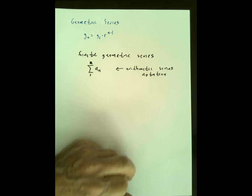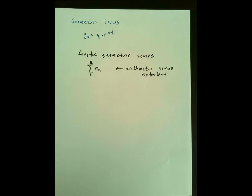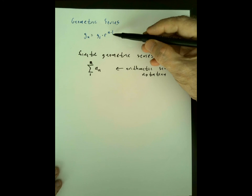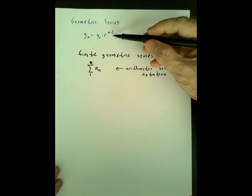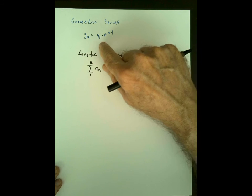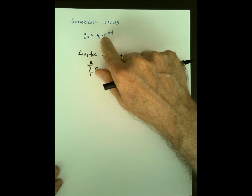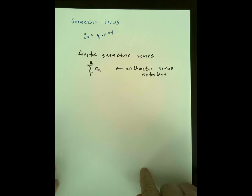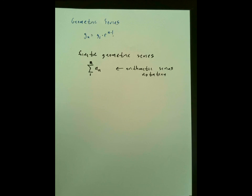We had not one but two formulas to calculate that sum for arithmetic series. For a geometric series it's the same kind of thing, except the general term — the explicit formula — for a geometric series is given by g-sub-n equals g1 times r to the n, where g1 is the first term and r is the common ratio.